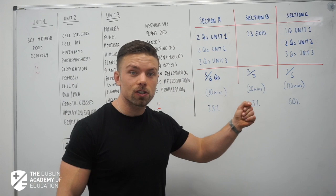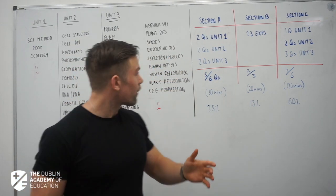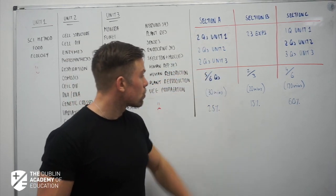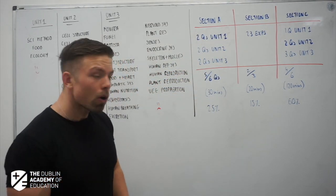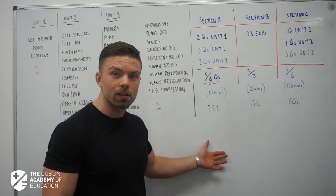It's broken into three sections. Section A is termed as short questions where we've actually got two questions from Unit 1, two questions from Unit 2 and two questions from Unit 3. You only have to answer 5 out of 6 of those. This is where 25% of your grade is.